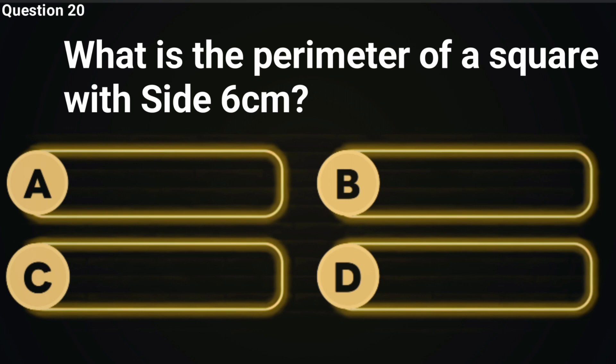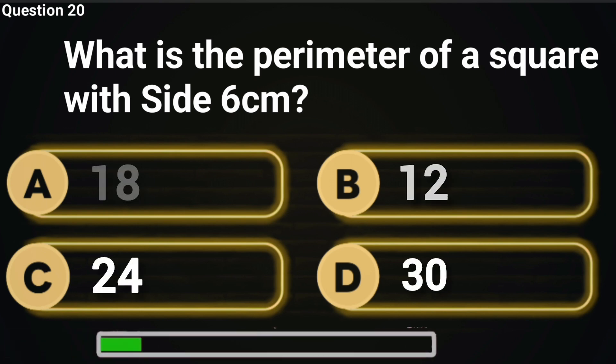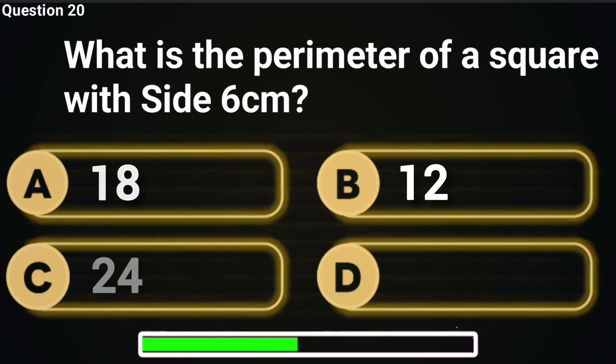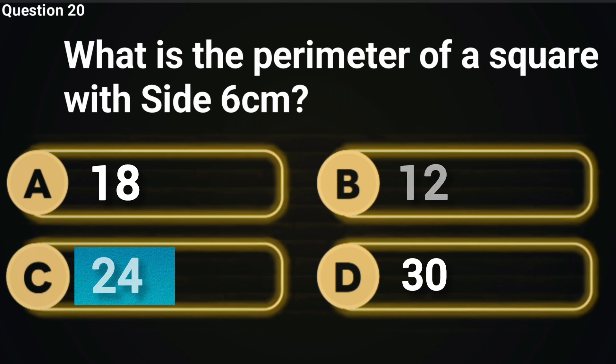What is the perimeter of a square with side 6 centimeters? Walk around it once and you've got your answer. Answer C, 24 centimeters is correct.